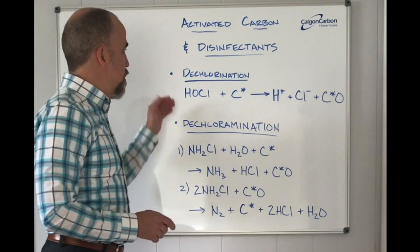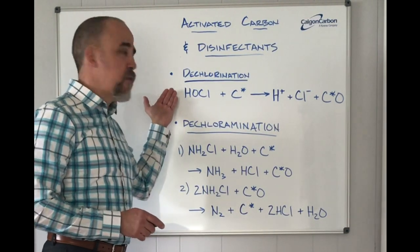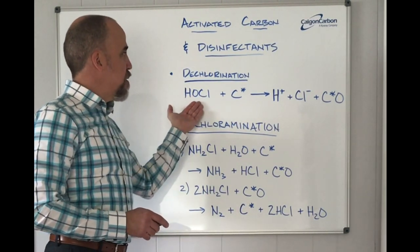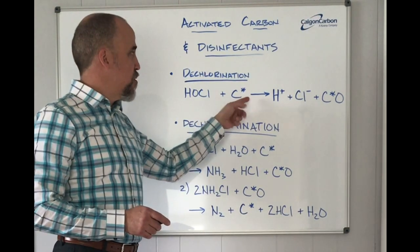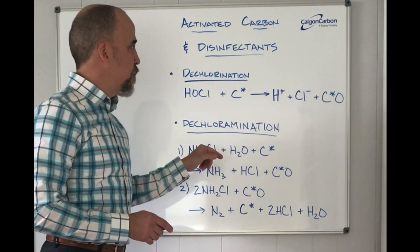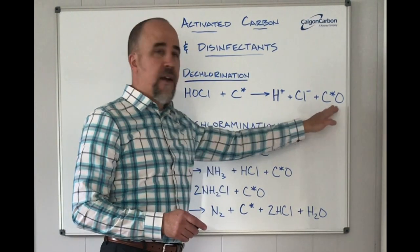If we look at the first process here, dechlorination, so the removal of chlorine, the hypochlorous acid will react with the activated carbon surface, here denoted by this star, and produce chloride and an oxidized surface.